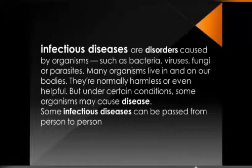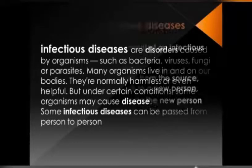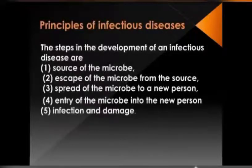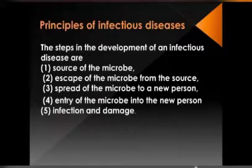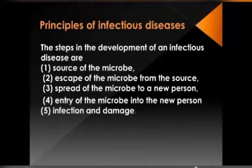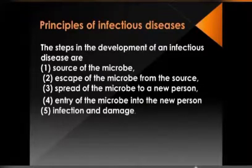Some infectious diseases can pass from person to person, which is why they are called communicable diseases — they are transferred from one person to another within the population. The principles of infectious diseases include: source of microbes, escape of microbe from the source, spread of microbes, and entry of microbe into a new person.